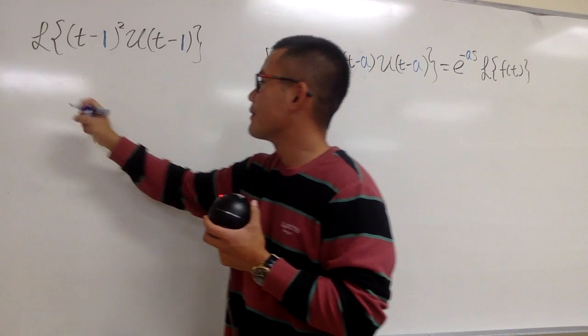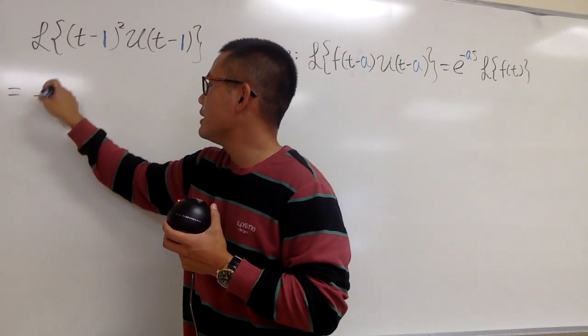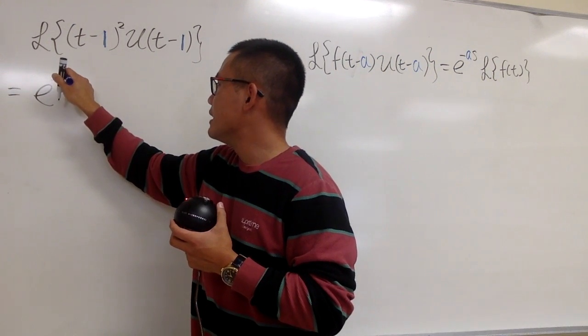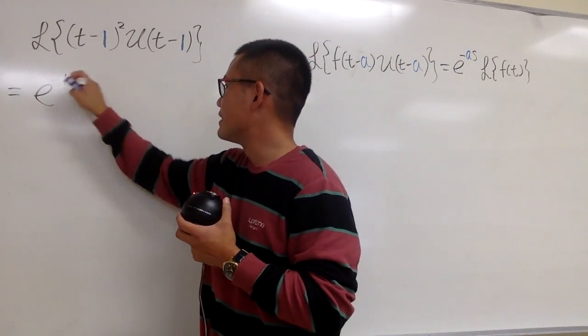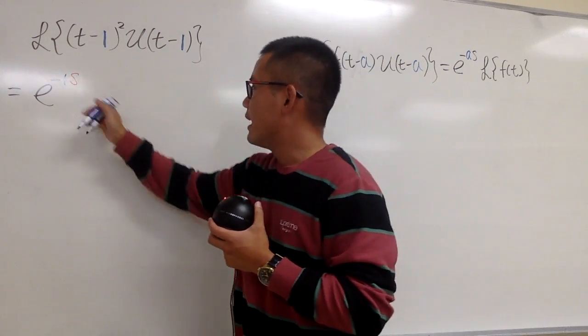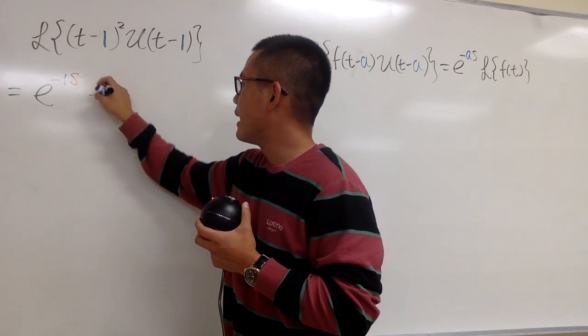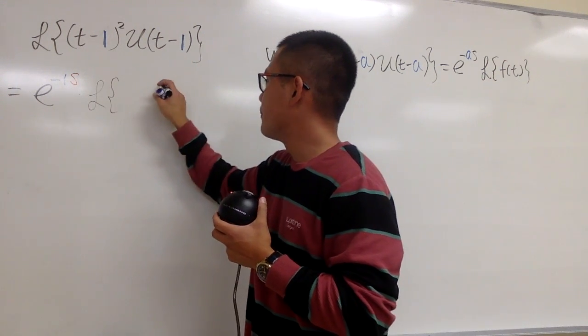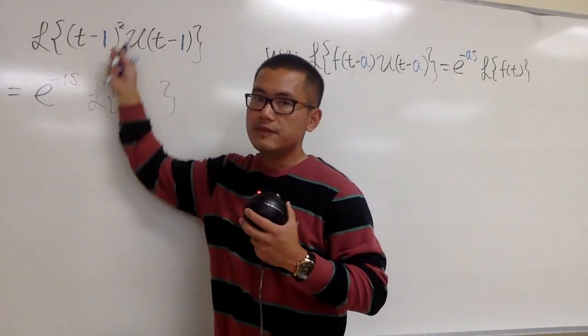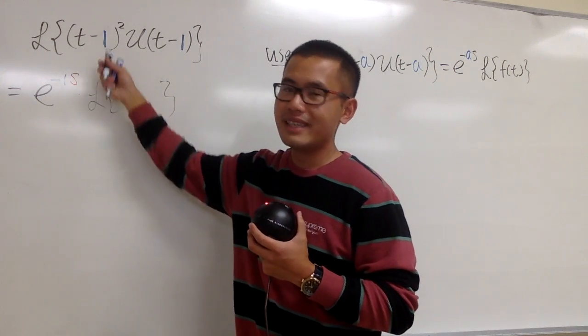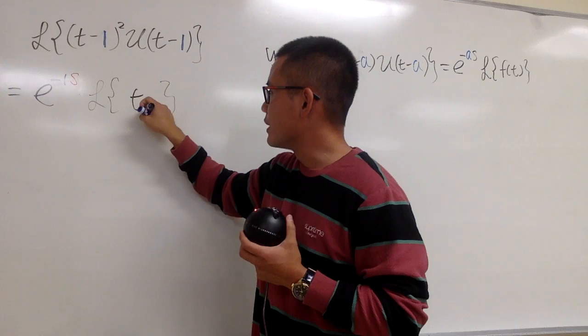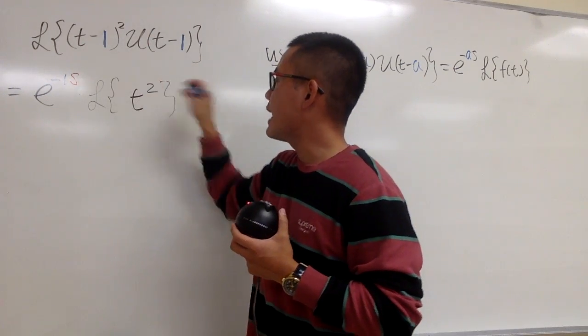So this is going to be, first of all, let's always write down the e to the negative as. In this case, it will be one, and as usual, let me put down the s in red. Negative 1s, and then we will multiply this by the Laplace transform of this function by the input. It's no longer t-1, it will be just t for the input, and then we have to square that.